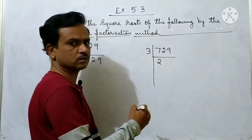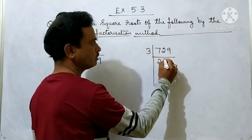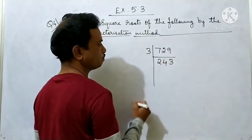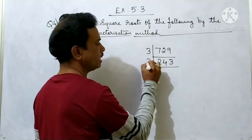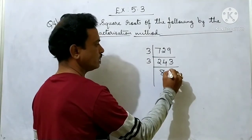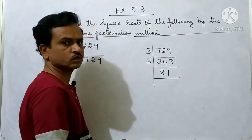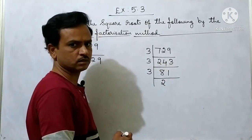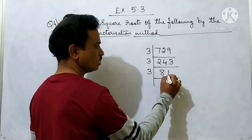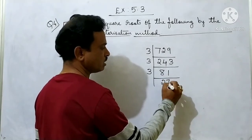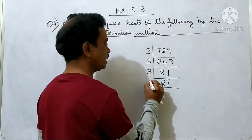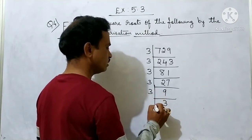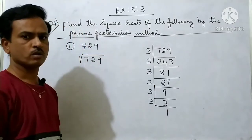Dividing step by step: 3 into 729 — 3 twos are 6, remainder 1; bring down to get 12, 3 fours are 12; then 3 threes are 9; next 3 eights are 24; then 3 ones are 3. Again, 3 twos are 6, remainder 2; bring down 1; 3 sevens are 21; next 3 nines are 27; then 3 threes are 9; finally 3 ones are 3.